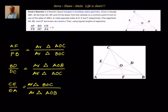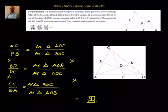We are done. Since we have AF/FB = area(AOC)/area(BOC), BD/DC = area(AOB)/area(AOC), and CE/EA = area(BOC)/area(AOB), when we multiply all three together, the numerator and denominator cancel out completely and we get the answer equal to 1. That is the proof of Ceva's theorem.